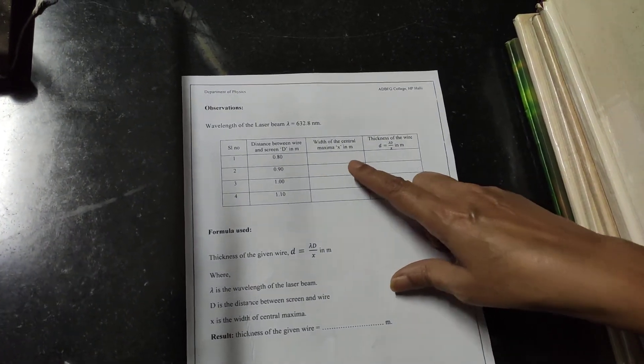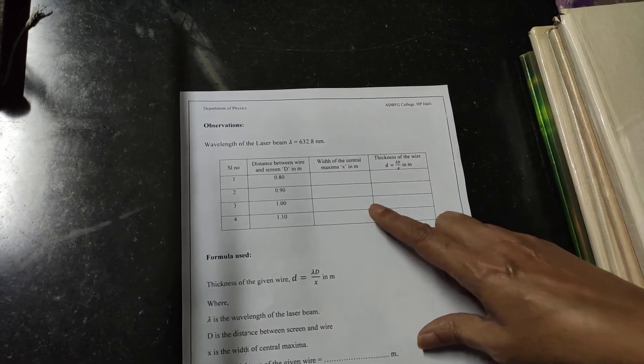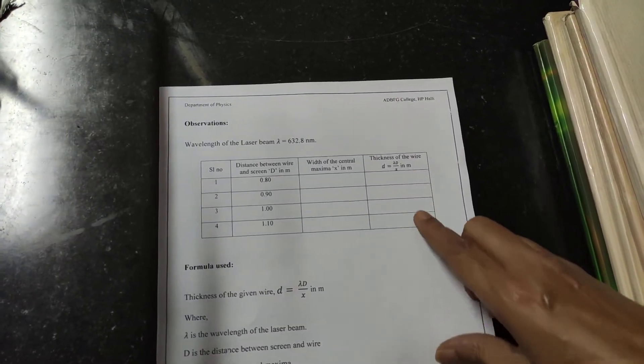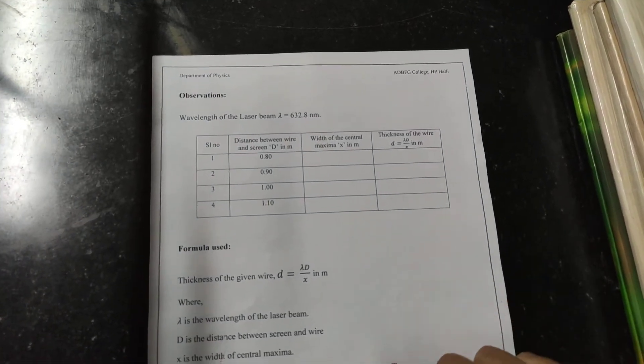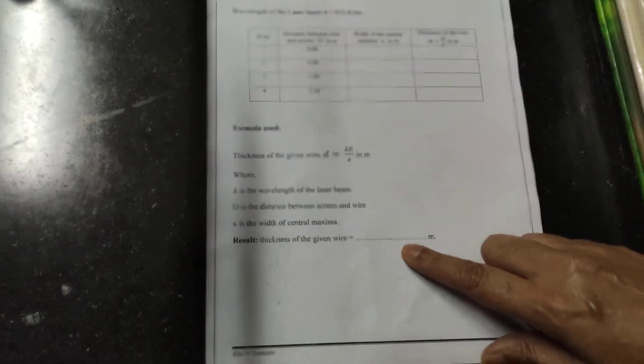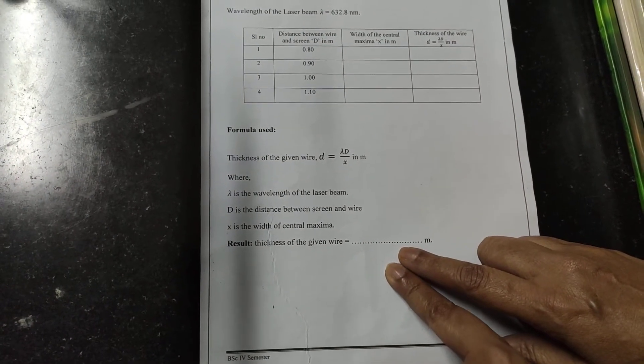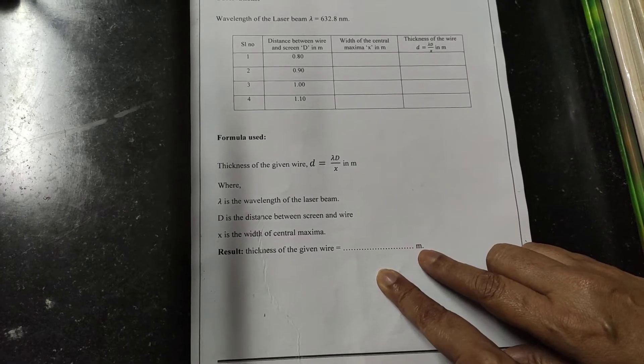So do the calculation for each reading here then take the average and write down the result here as the thickness of the wire and that will be in meters.